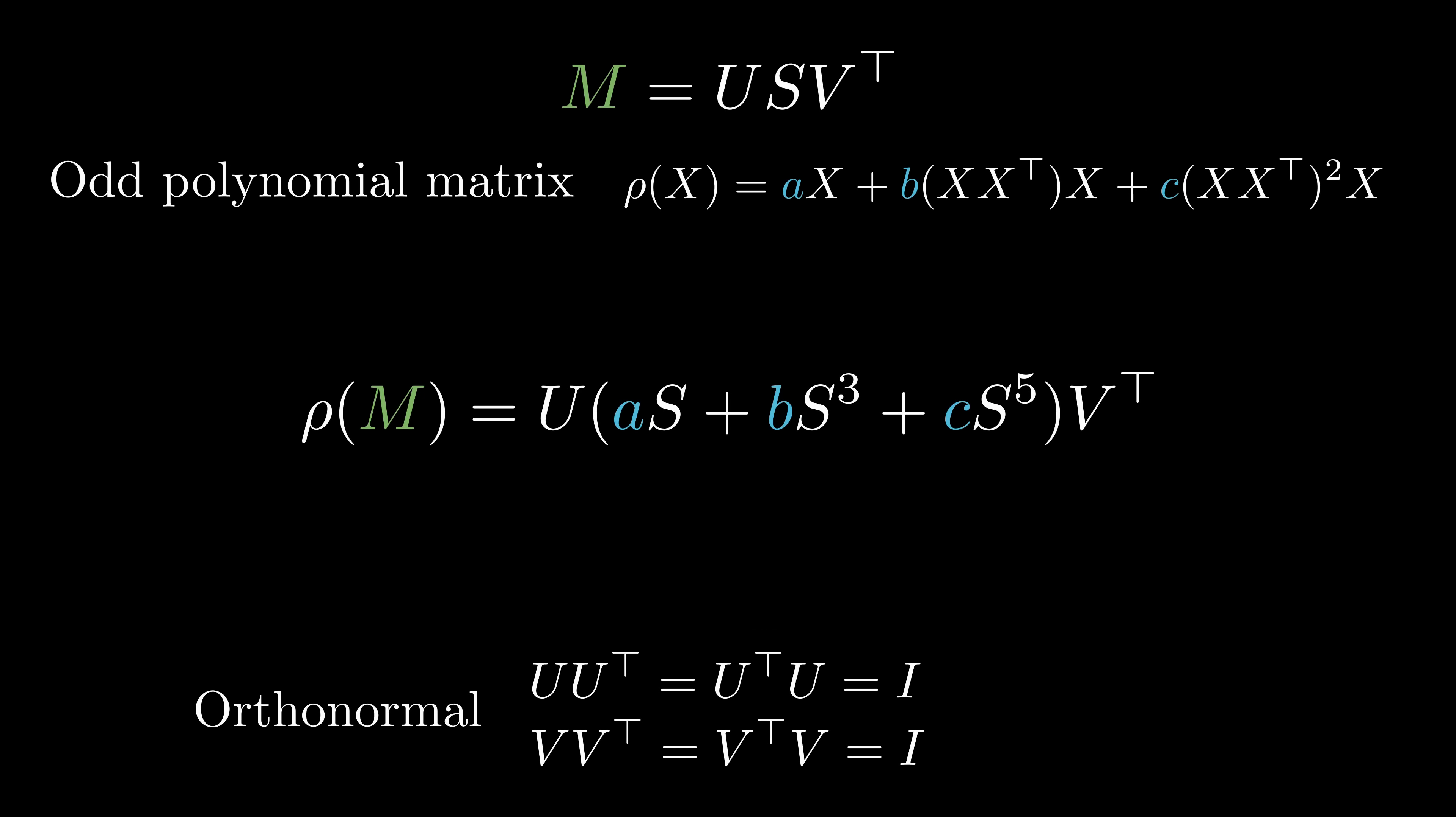This principle applies to any odd polynomial, including higher-order variants like a fifth-order polynomial. By choosing appropriate values for the coefficients a, b, and c, we can push the singular values closer to 1, without explicitly computing the SVD.